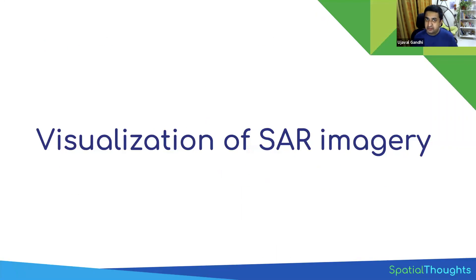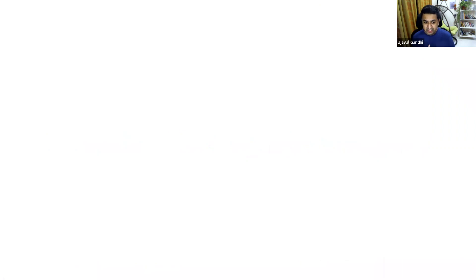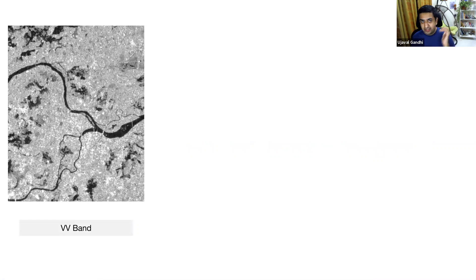The visualization of this data is not very intuitive because what the bands contain is the strength of the signal that returned. The pulses are sent, hit the ground, and sometimes get reflected back — whatever is received is the intensity of the radiation, which is the pixel value. In the VV band, the areas that appear dark are water areas. Since the water surface is smooth, most of the signal gets reflected away and is never received back, so those values are very low. Rough surfaces like urban areas reflect most of the signal back and appear bright.